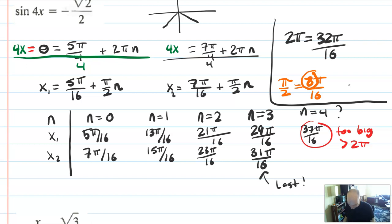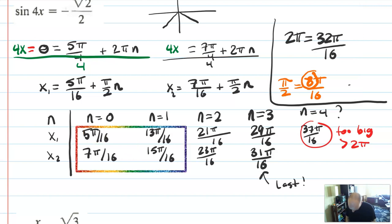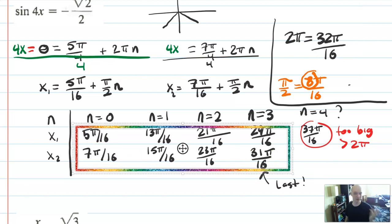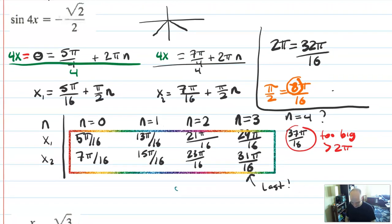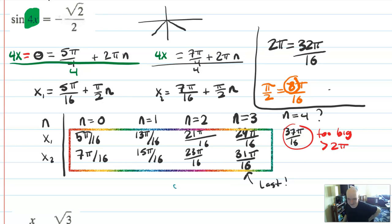There are your 8 solutions, which matches the idea that we have a sine graph sped up by a factor of 4 — where you would have two solutions originally, sine 4x means your graph is going faster so you have a lot more solutions. It's a little tedious with fractions, but it's not that hard once you know the trick: dividing the general form by that coefficient to find the new period of your solution.